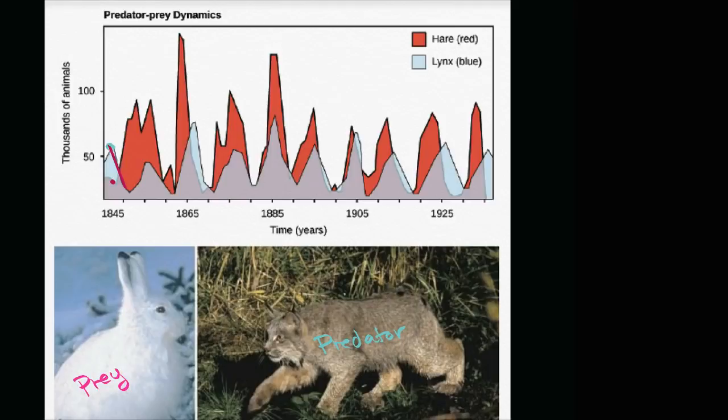So the predator population decreases, and as that predator population decreases, well then the prey population increases because there's less folks around to hunt them. So the prey population increases, and you see that the other way around.